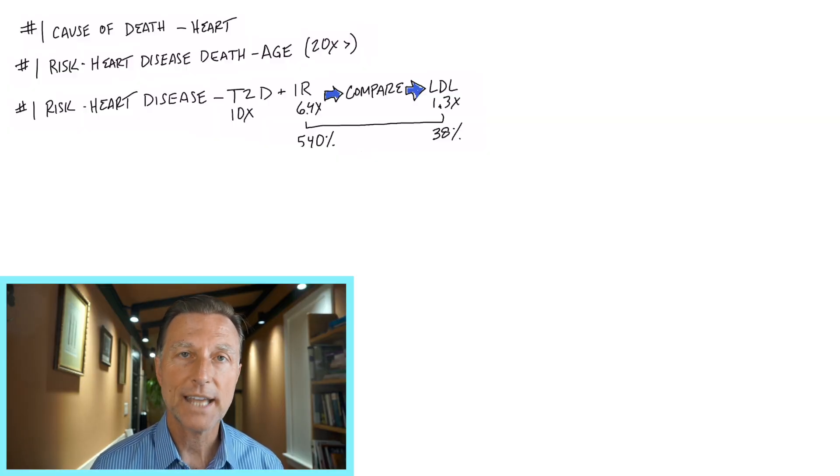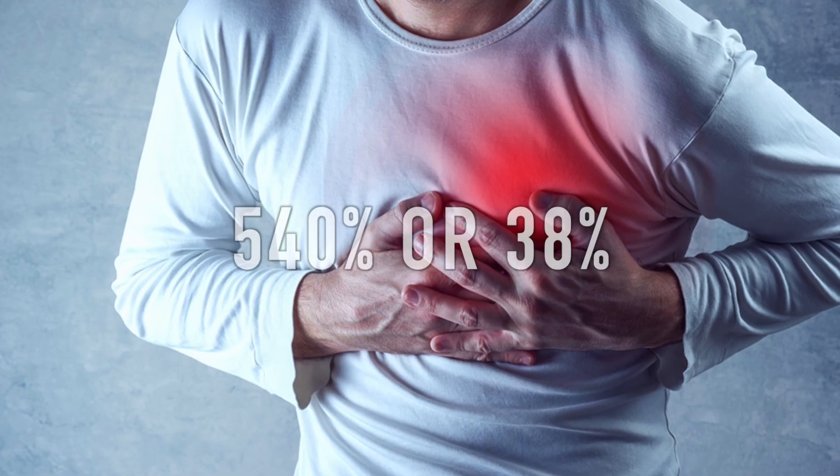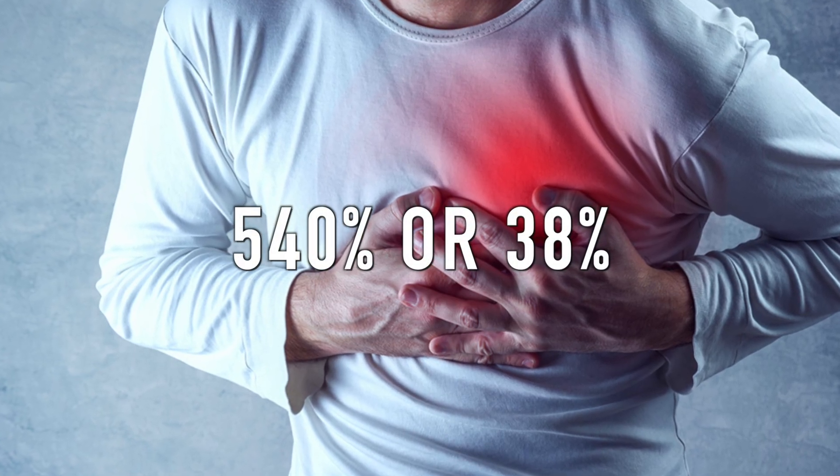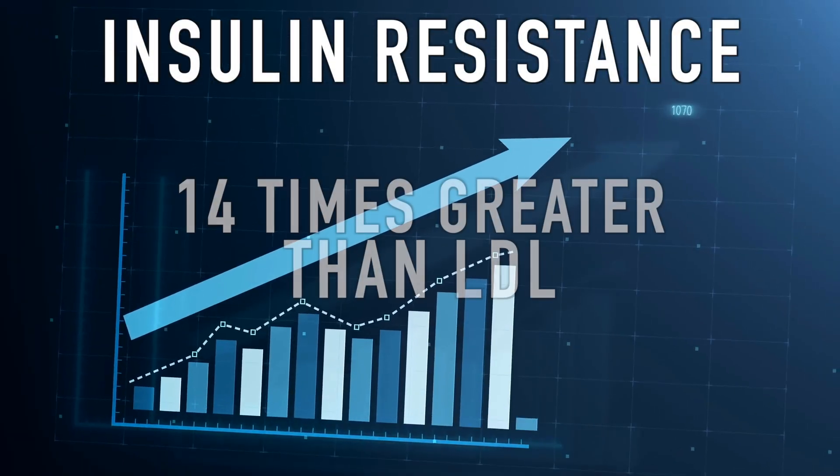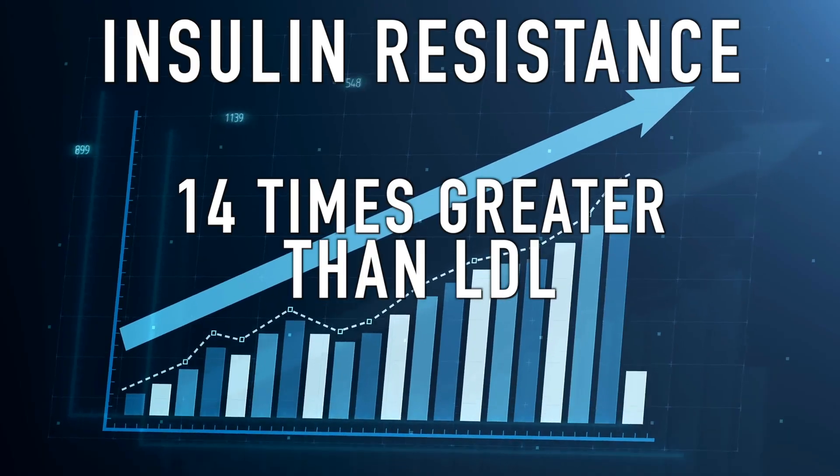Let's compare that to insulin resistance, which increases your risk by 540%. So if we're looking at the relative importance or focus or attention that you should put on preventing heart attacks, what would be a bigger number? 540% or 38%?